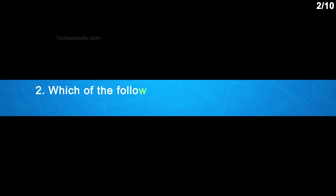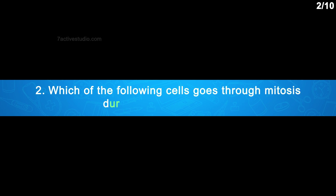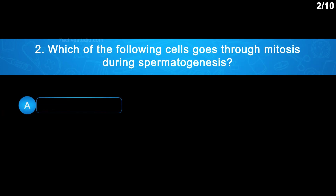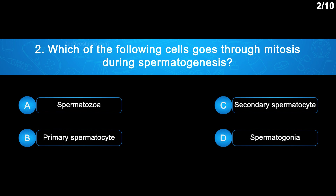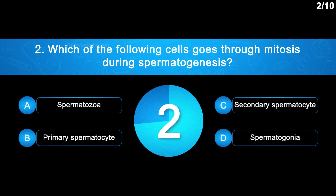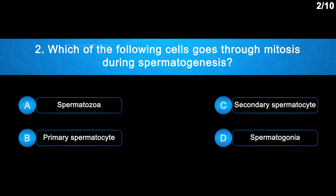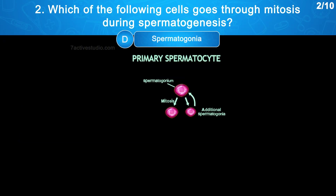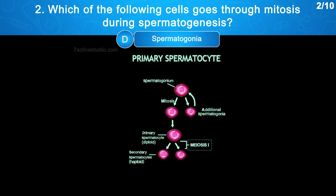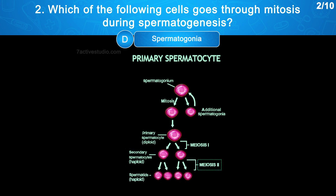Question No. 2: Which of the following cells goes through mitosis during spermatogenesis? Option A: Spermatozoa. Option B: Primary spermatocyte. Option C: Secondary spermatocyte. Option D: Spermatogonia. The correct answer is Option D — spermatogonia. Spermatogonia divide by mitosis to form primary spermatocytes, which go through meiosis 1 to produce secondary spermatocytes, and then divide again through meiosis 2.